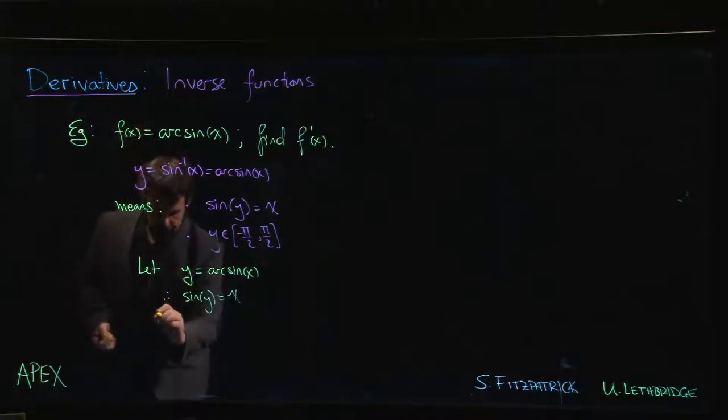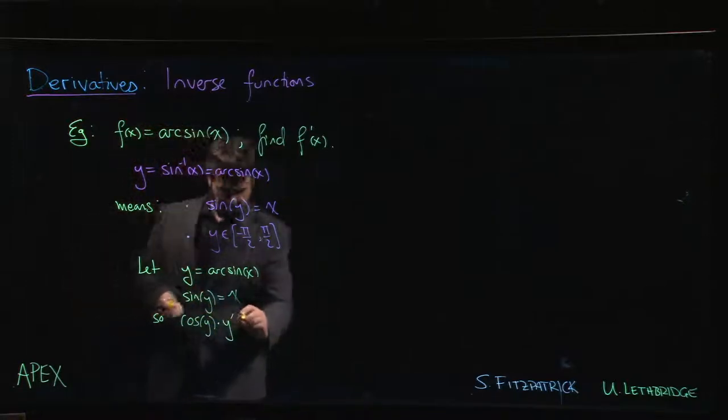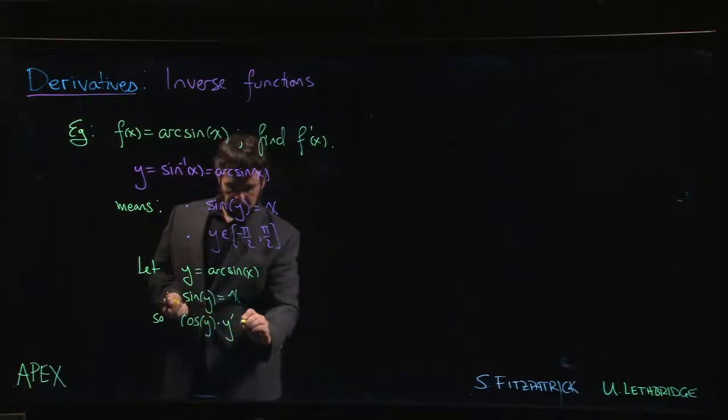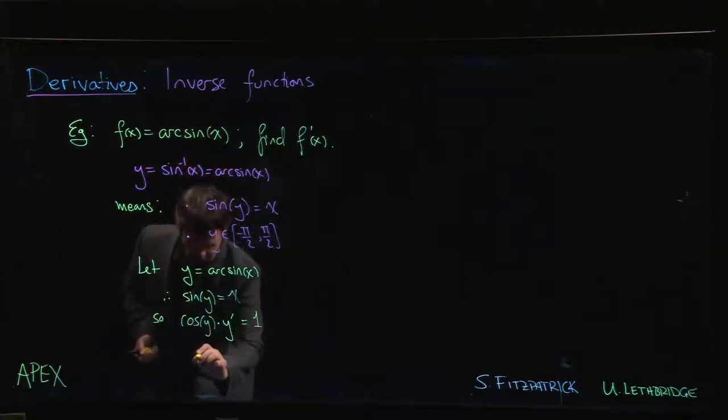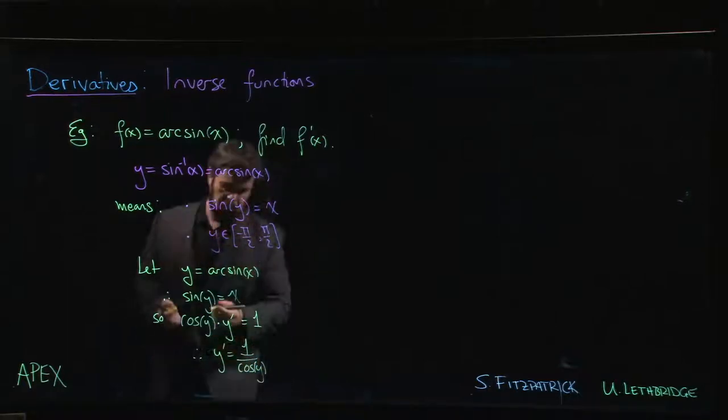The derivative of sine is cosine, but then we have to multiply by y prime because it involves a differentiation. So cosine y times y prime equals the derivative of x, which is one. So here's y prime: one over cosine of y.